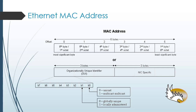In this section, I want to talk about the structure of a MAC address. A MAC address is an address that is used in the data link layer. The data link layer is the second layer from the bottom of the OSI model.